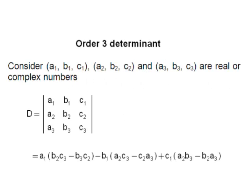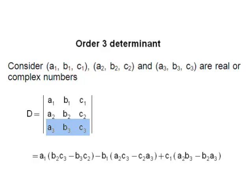Determinants of order 3. If A1, B1, C1; A2, B2, C2; and A3, B3, C3 are real or complex numbers, then A1 B1 C1, A2 B2 C2, A3 B3 C3 is a determinant of order 3. Here A1, B1, C1 form the first row, A2, B2, C2 the second row, and A3, B3, C3 the third row.